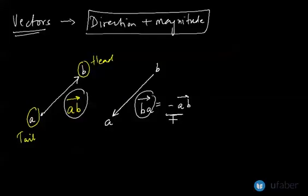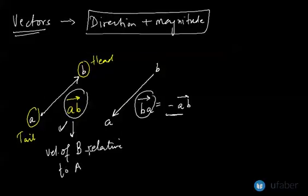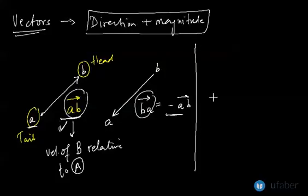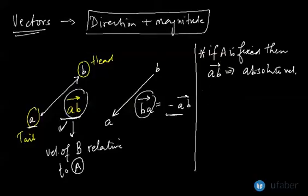Vector AB may also represent the velocity of body B relative to body A. If point A is fixed, then this velocity is called absolute velocity.